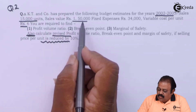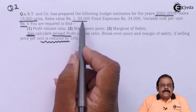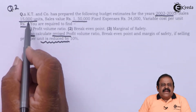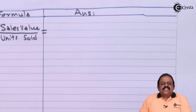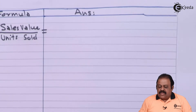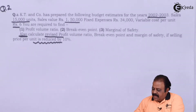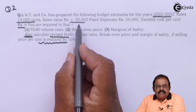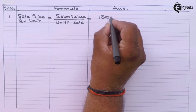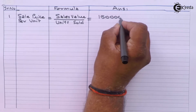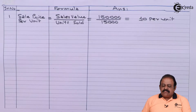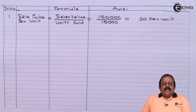For the current year, sales value is ₹1,50,000 and units sold are 15,000. With this information we can find out the sale price per unit: sales value ₹1,50,000 divided by units 15,000 gives us a selling price of ₹10 per unit. This sale price was not directly given in the question.